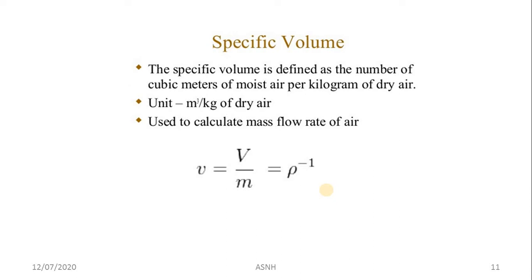Specific volume is defined as the number of cubic meters of moist air per kilogram of dry air. It is expressed in m³/kg. Specific volume is used to calculate the mass flow rate of air, and is given by volume divided by mass.